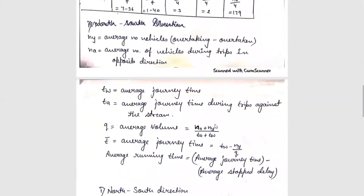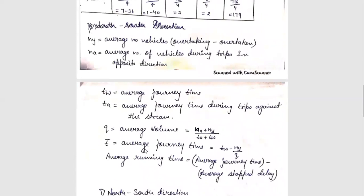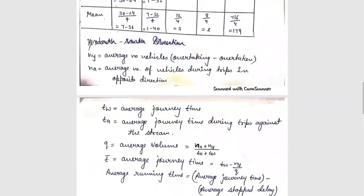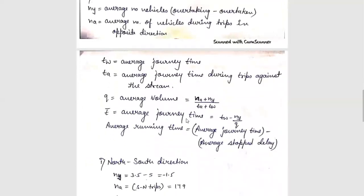Now we need to apply the formulas. We need to find average volume, journey speed, and running speed. The formula for average volume is: Q = (NA + NY) / (TA + TW), where NY is the average number of vehicles overtaking minus overtaken, NA is the average number of vehicles counted during trips in the opposite direction, TW is the average journey time with the stream, and TA is the average journey time against the stream. Average journey time T-bar = TW minus NY divided by Q. Average running time = average journey time minus average stop delay.